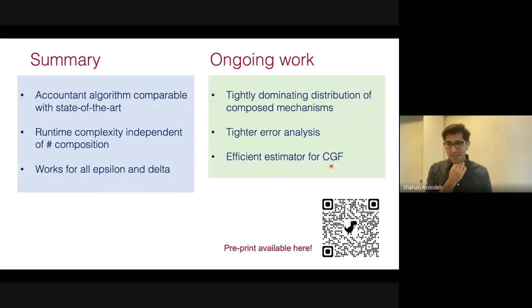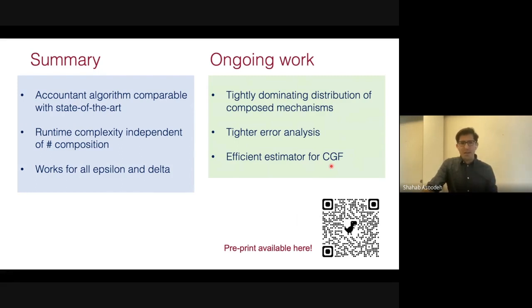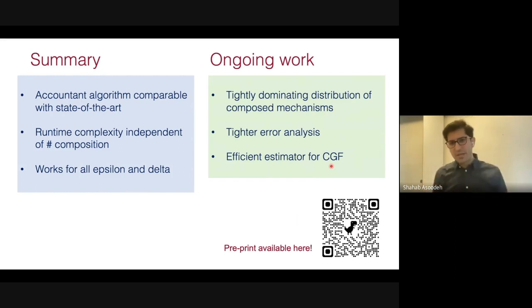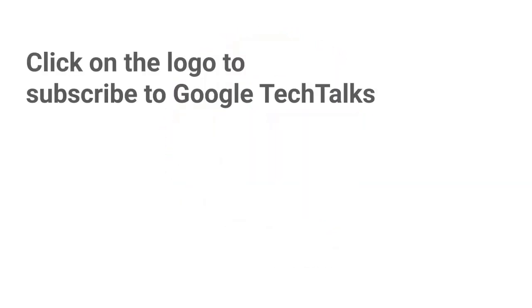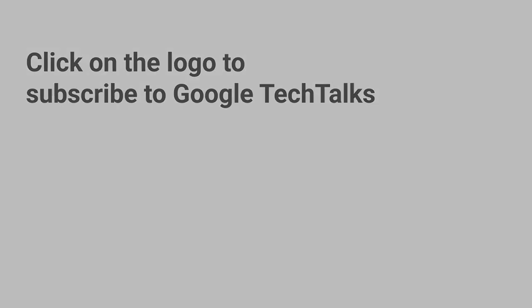The paper is available on arXiv (QR code shown). In the paper there are actually three saddlepoint accountants — the third one is based on a third-order Taylor expansion, which is a little more complex but much more accurate. Thank you so much, and I'm happy to take questions.